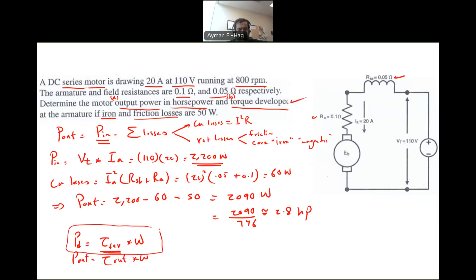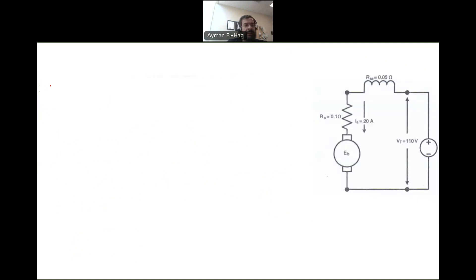So I need to find the power developed, not the P out. And I will find it in three different ways. So the first one, the P developed is basically your P in minus the copper loss, so it's equal to 2,200 minus the 60, and this will give me 2,140 watt. This is one way. The second way for P developed is equal to P out plus the P rotational loss, which is equal to 2,090 plus 50, which is also 2,140 watt.